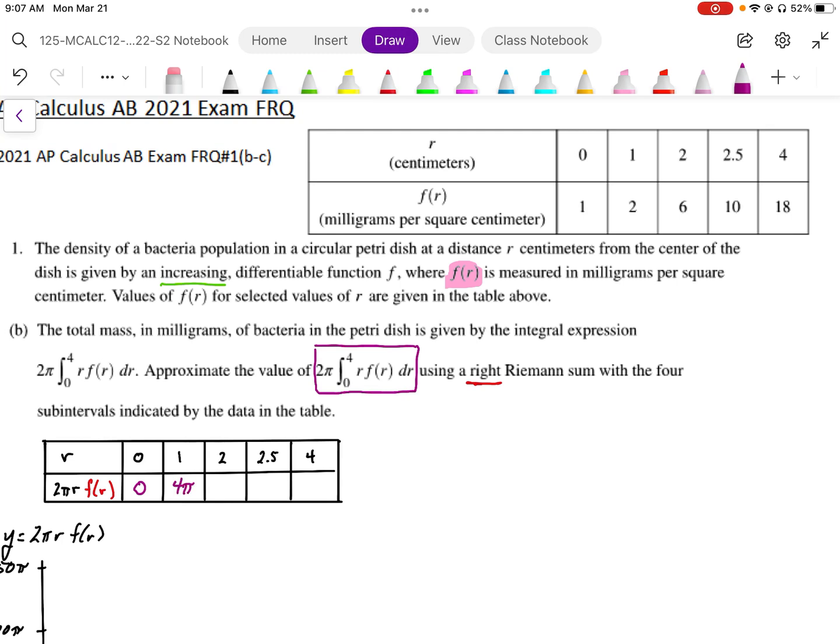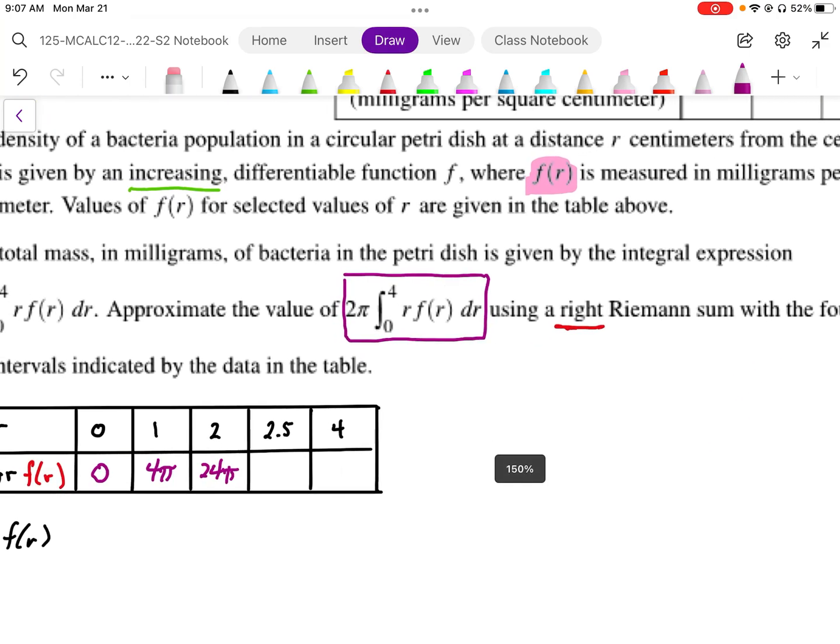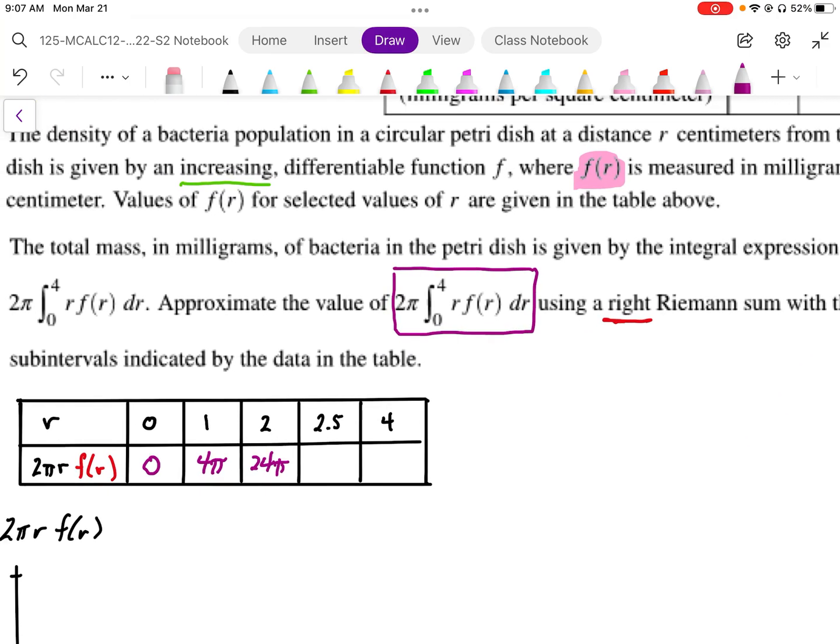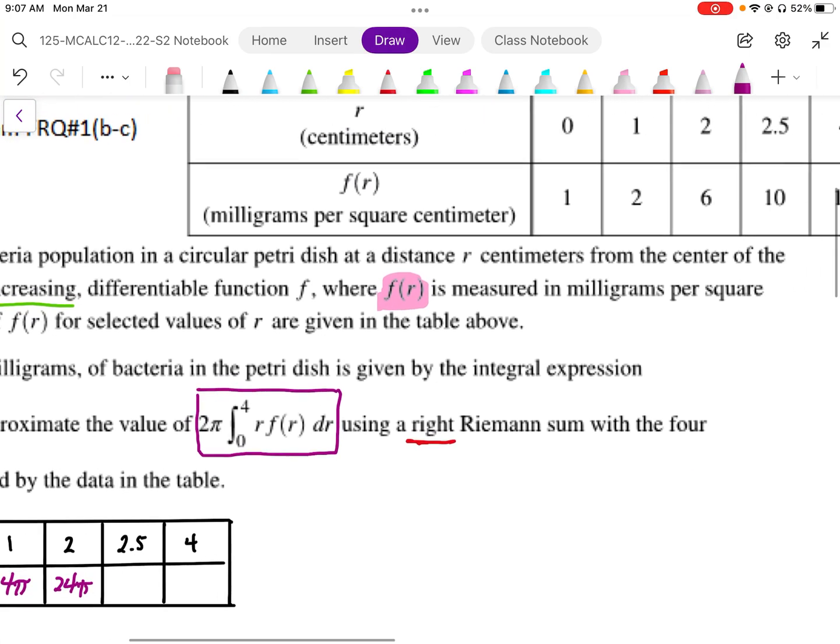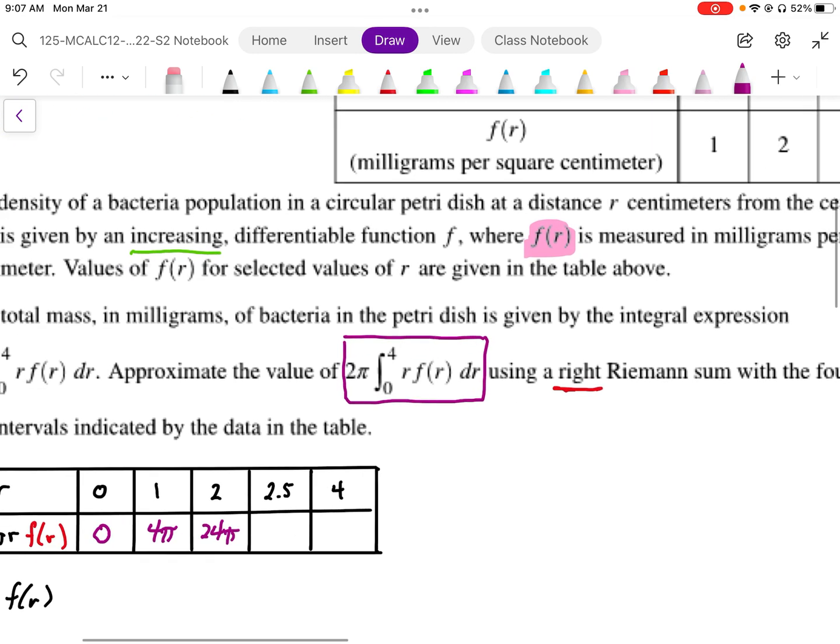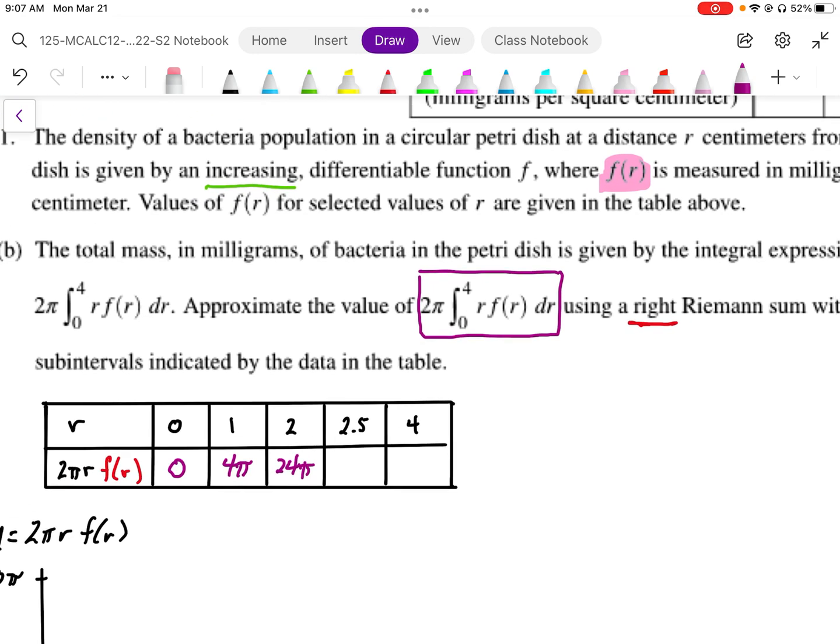For r is 2, we're going to end up with 24π. When r is equal to 2.5, f(r) is 10, 2π r is 5π.